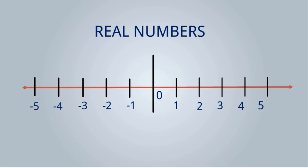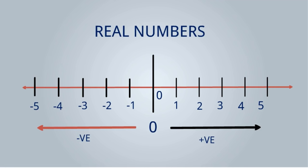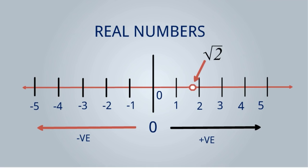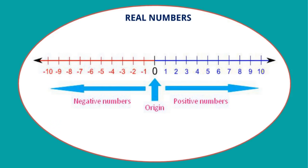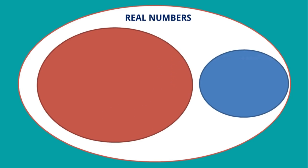Today we are going to discuss real numbers, so we will not consider the imaginary line — only the real line. On the real number line, the right side is positive and the left side of the origin is negative. All numbers between 1 and 2, or 2 and 3, etc. are also real numbers — whether fractions like 0.5, one half, or root 2. Every number on this horizontal line is a real number.